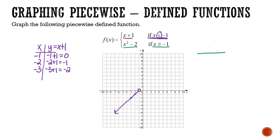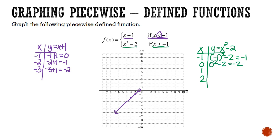We'll do the same thing for the second piece. Let's start at the endpoints — you always want to start at the endpoints given for the inequalities. Then find values that are also in that interval. So x values greater than or equal to negative 1 would include 0, 1, and 2. When I plug those in: negative 1 squared minus 2 is negative 1. Zero squared minus 2 is negative 2. One squared minus 2 is negative 1. And 2 squared minus 2 is 2.